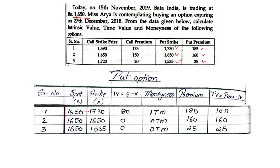I hope everyone has understood how to solve the sum based on moneyness, time value, and intrinsic value. It's a very simple topic — you just need to note down the table and apply the formula according to each table heading. I hope everyone has understood that, so with that we will be ending this video here. Thank you.